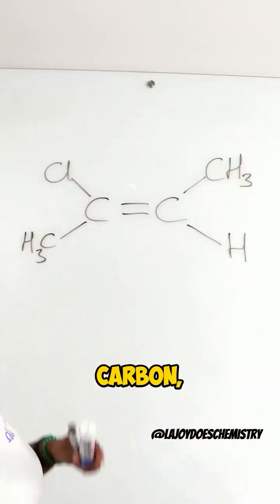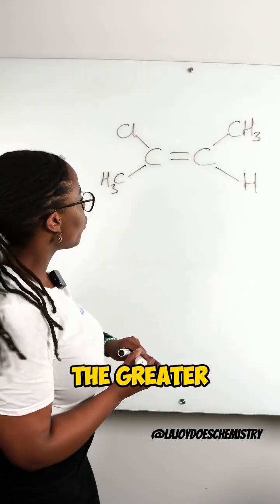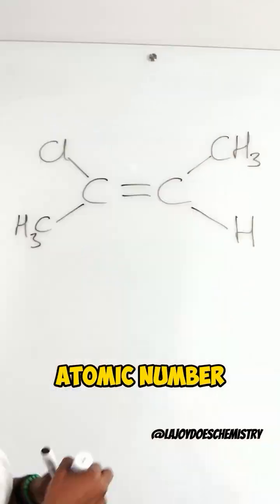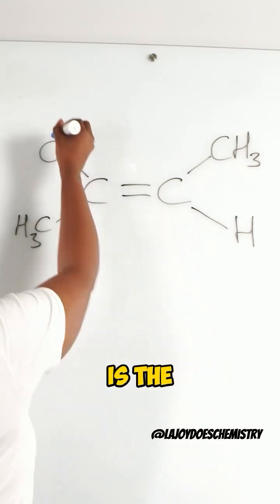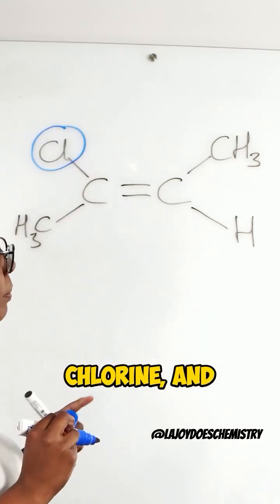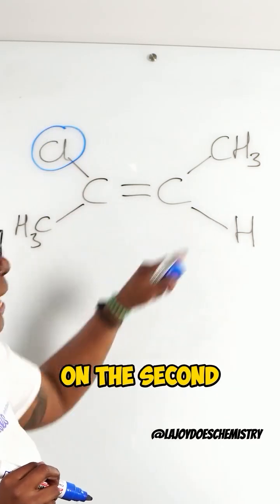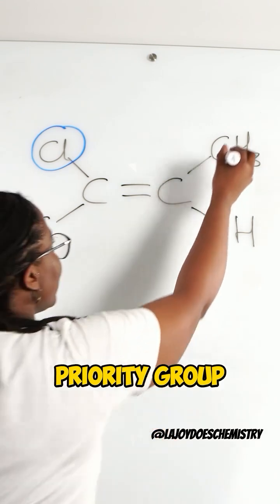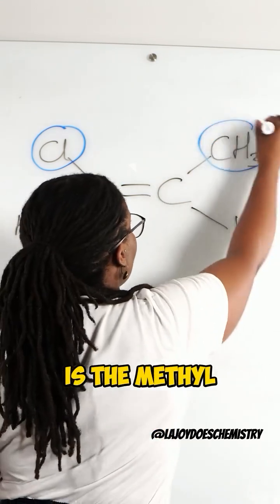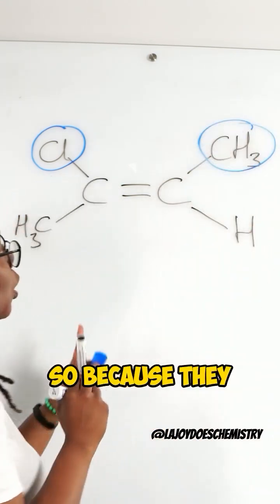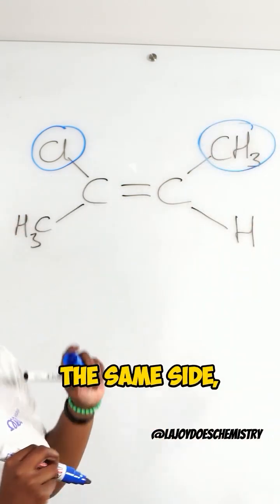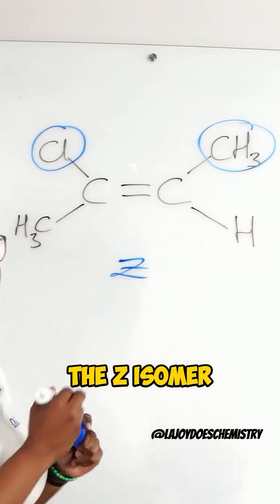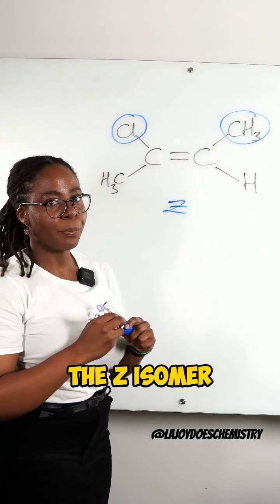On the first carbon, the group with the greater priority — the higher atomic number — is the chlorine. And on the second carbon, the higher priority group is the methyl group. So because they are on the same side, that gives us the Z isomer.